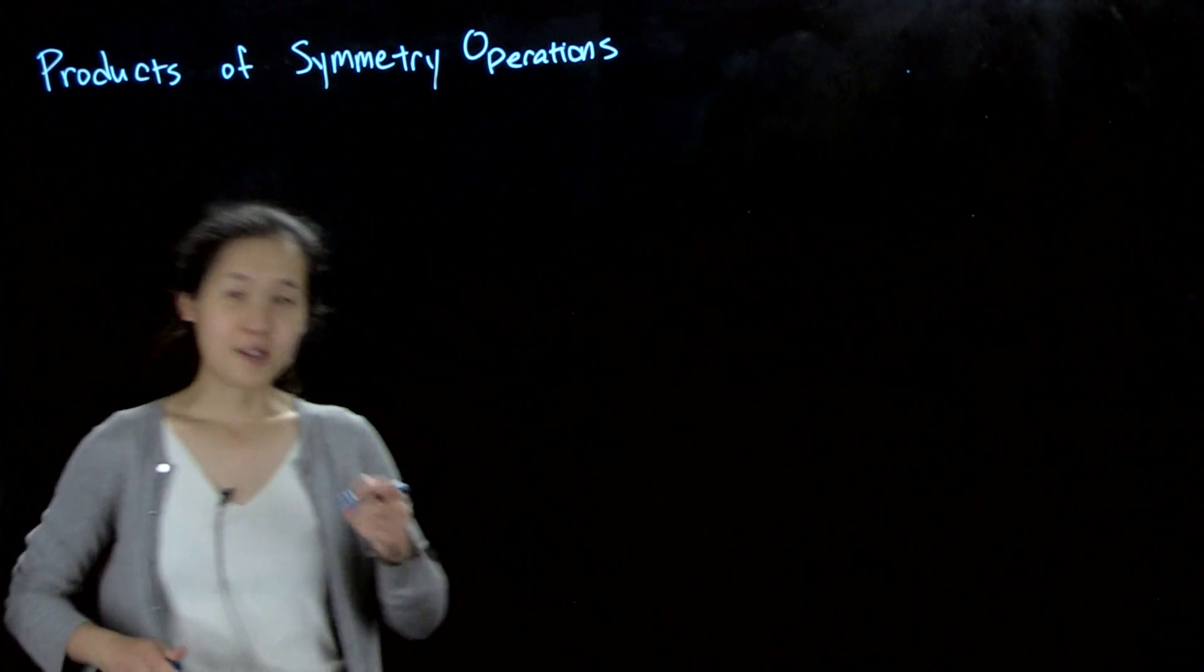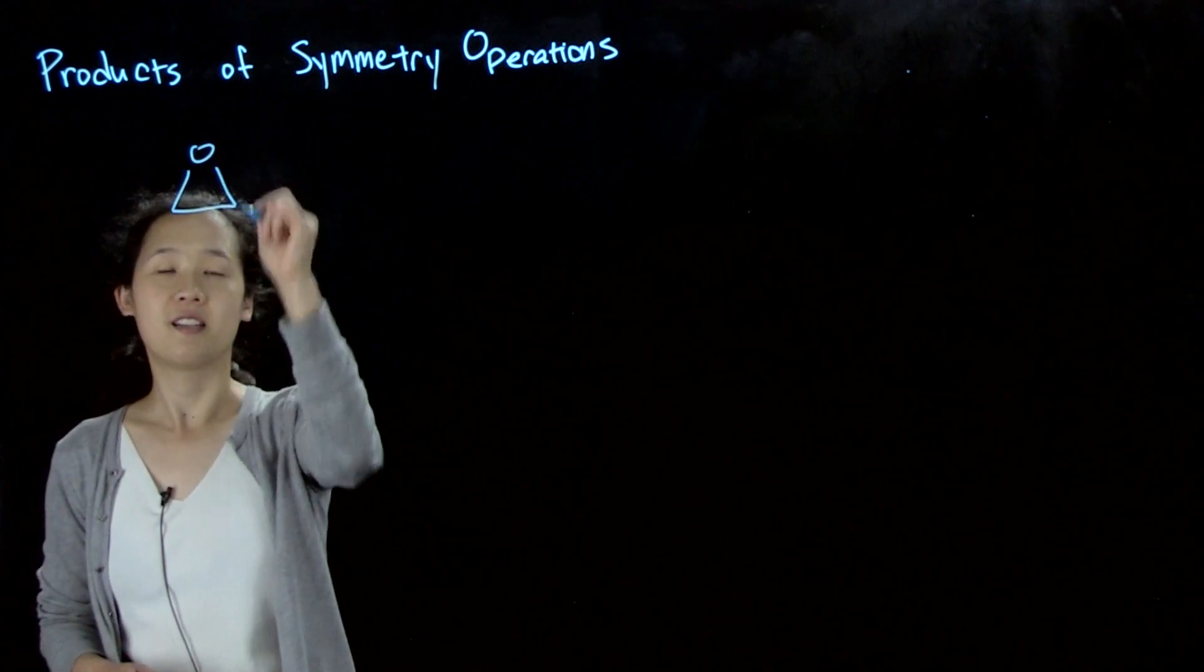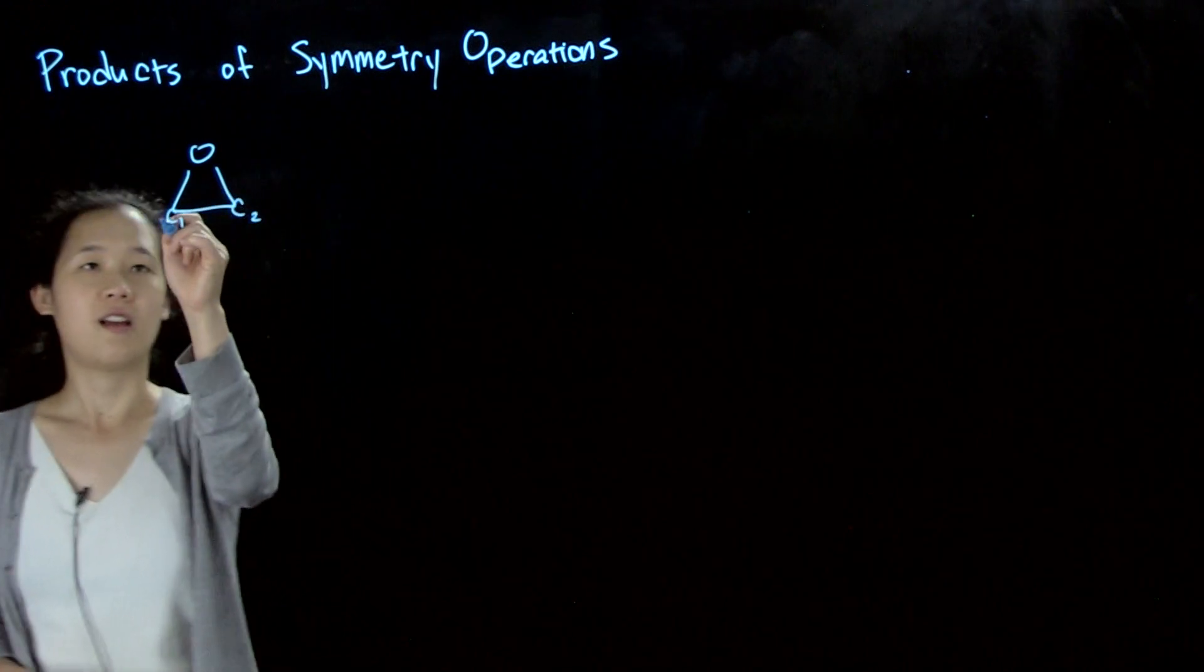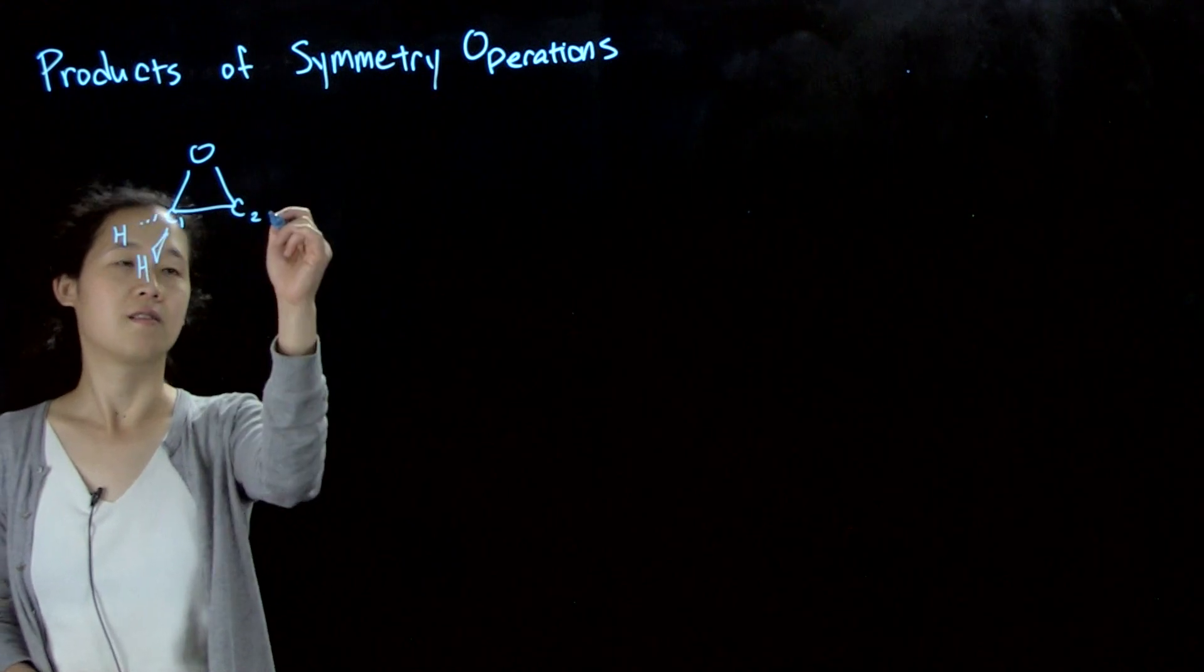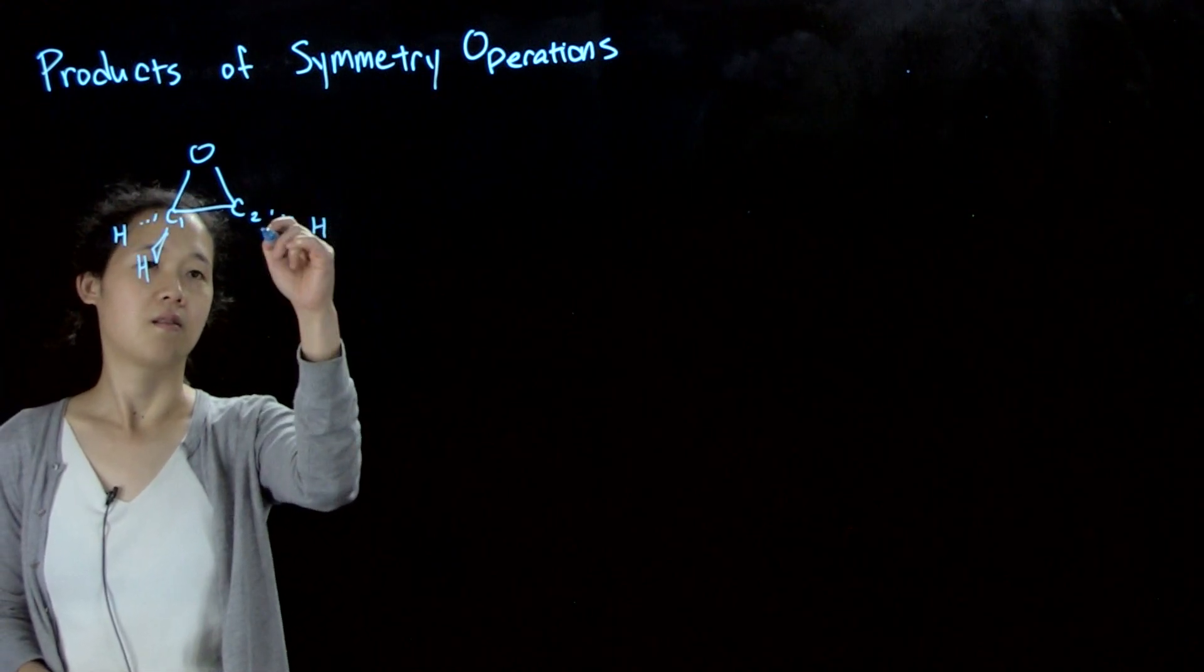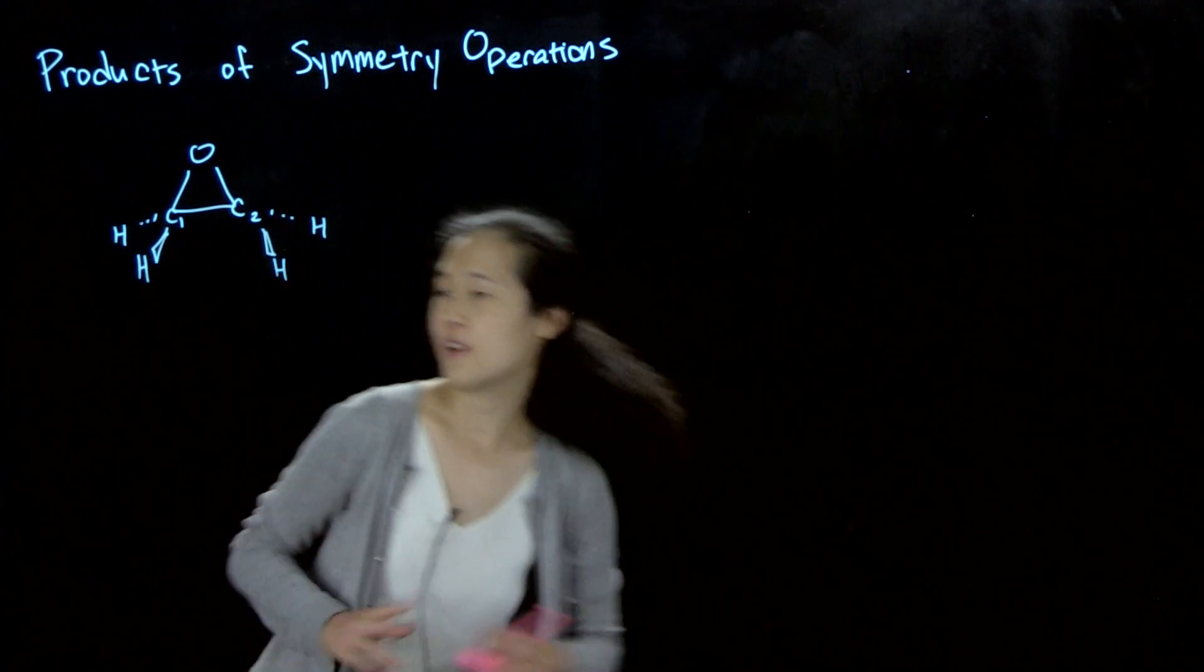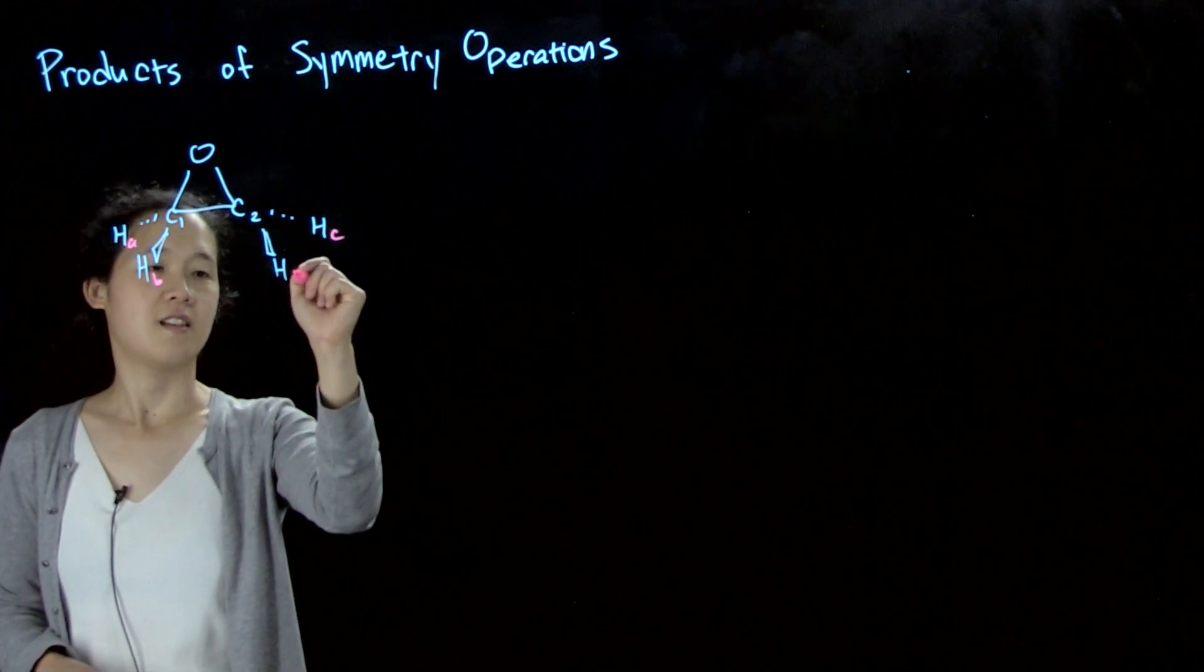Let's do an example. So suppose I take ethylene oxide. This is an epoxide. We have carbon 1, carbon 2, and then we have four hydrogens. And these I will label A, B, C, and D.